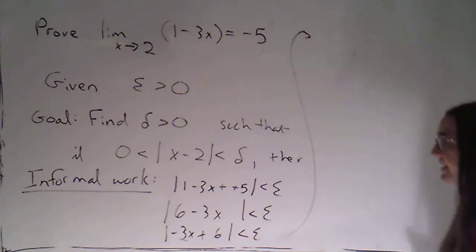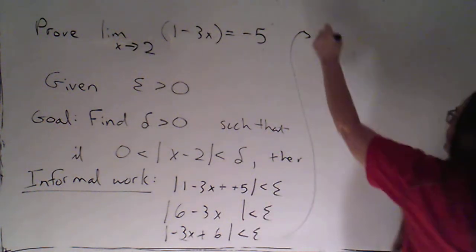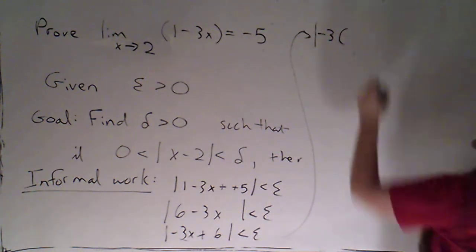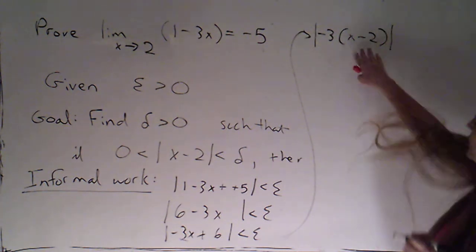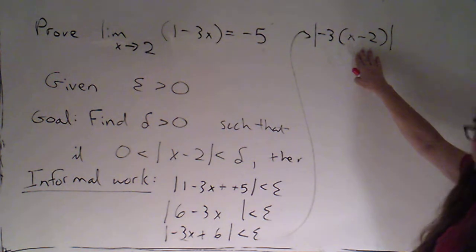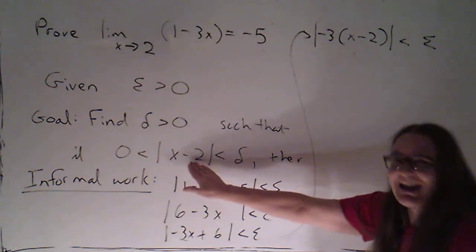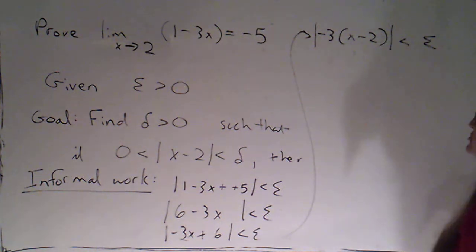So now we'll come up here. I'm going to just factor out a negative 3, still inside the absolute values. So that becomes negative 3 times the quantity x minus 2 inside the absolute values is less than epsilon. I'm kind of liking this because I'm seeing an x minus 2 and I know that's sort of what I'm hoping to get to.